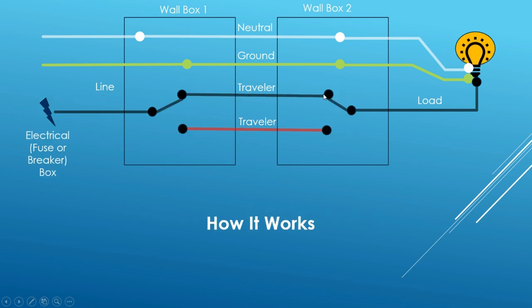When you change the position of the first switch, there's no path for the electricity to move from the circuit breaker to the light. Changing the position of the second switch completes the circuit across the red traveler. And now we have power to the light, so of course the light comes on. And moving the first switch back to its original position breaks the circuit once again.